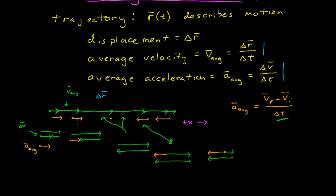So here are the five average accelerations for my motion diagram. In each case I take successive velocities and take the difference between them. The difference gives me the direction of the acceleration vector, or in one case, zero acceleration. I place the acceleration arrow at the point between the two velocity vectors to indicate this is the average acceleration in that region. So here I have a complete motion diagram with individual positions, velocity vectors, and average accelerations between successive velocity vectors.